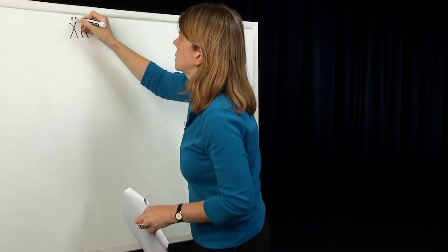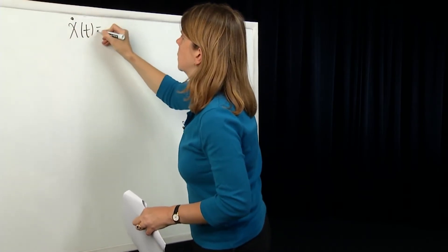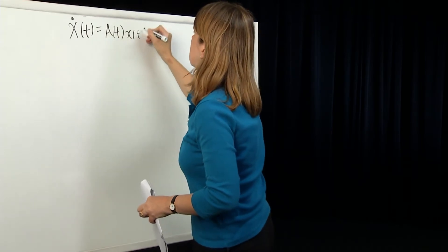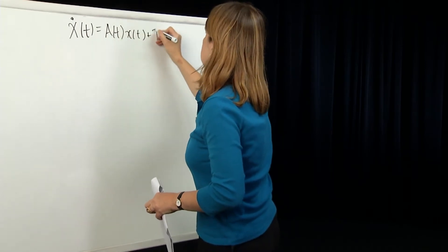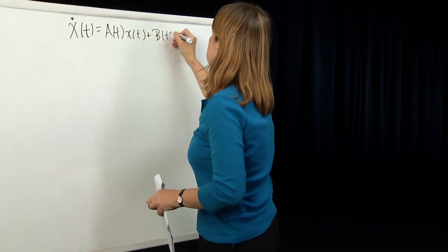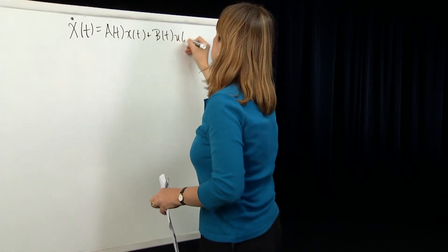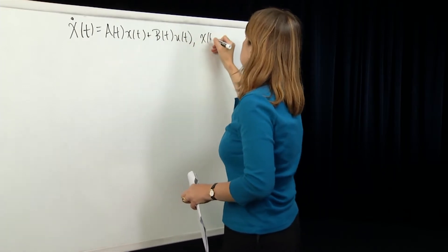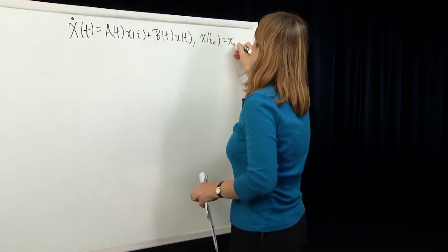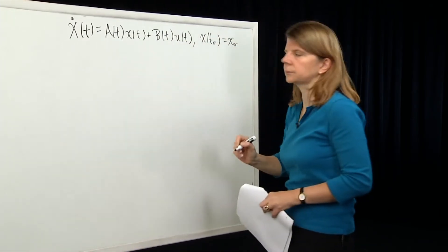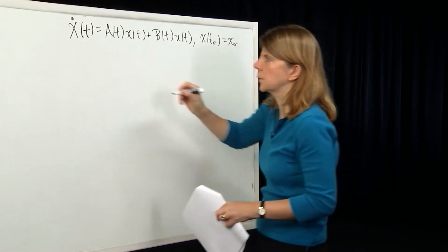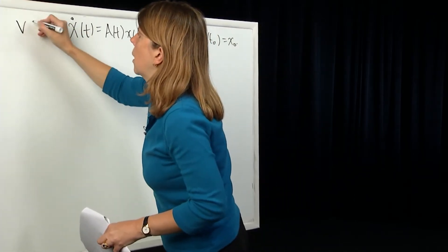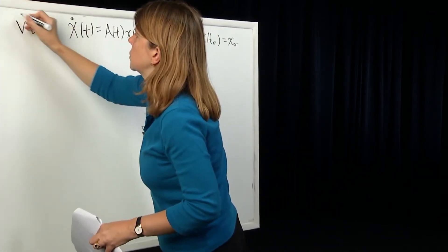We recall from module 17 that we introduced the concept of a differential equation: x-dot is equal to A(t) x(t) plus B(t) u(t), with some initial condition x(t₀) equal to x₀. That's what we call our vector differential equation.